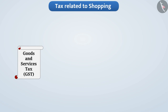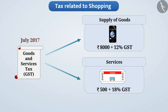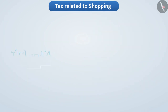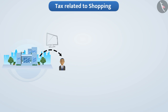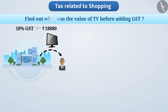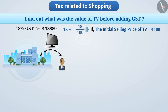The Government of India implemented Goods and Services Tax (GST) from July 2017, levied on the supply of goods or services or both. Suppose a shopkeeper sold a TV for 18,880 rupees including 18% GST. To find the value of the TV before GST: 18% means if the initial price is 100 rupees, GST is 18 rupees.